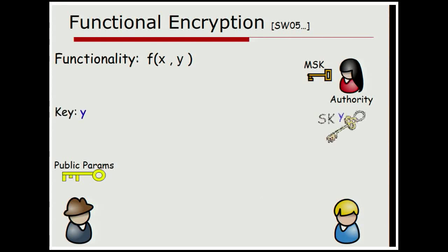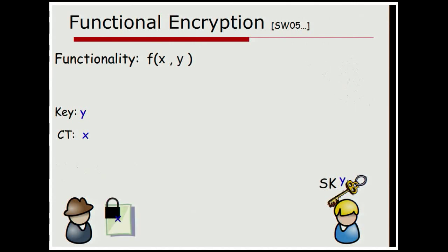So let's see here. If we're to animate this, the authority will give Alice the secret key for Y. Bob will somehow encrypt using the public parameters in X. And now later on, if Alice is able to get a hold of this secret key, she's able to learn F of X, Y. I won't get deeply into the security definitions here, but intuitively, we want the property that she should only learn the function F of X, Y.